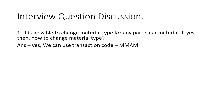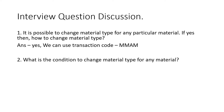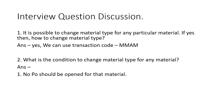Yes, we can change the material type by using the transaction code MAM, but there are certain criteria. The next question is: what are the conditions to change the material type for a specific material? The first condition is that there should be no open PO against a specific material for any vendor.